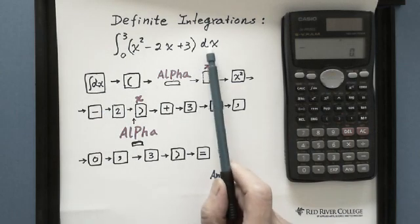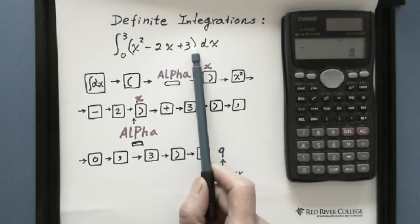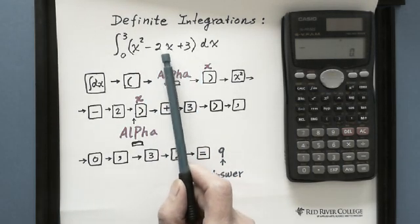That means they already have dx, but our job is to enter this function: x squared minus 2x plus 3.